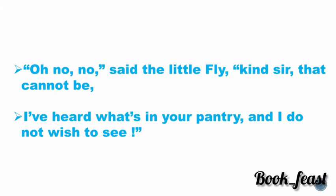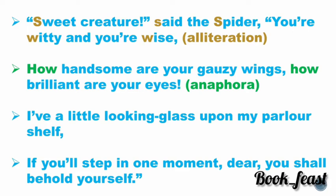The spider says: 'Sweet creature, you are witty and wise. How handsome are your gauzy wings, how brilliant are your eyes.' Now the spider uses 'sweet creature.' Witty means talented and intelligent. Normally we say eyes may be bright, not brilliant — but here, in order to flatter the fly, the spider uses the word 'brilliant' for the eyes. 'I have a little looking glass upon my parlor shelf. If you will step in one moment, dear, you shall behold yourself.'